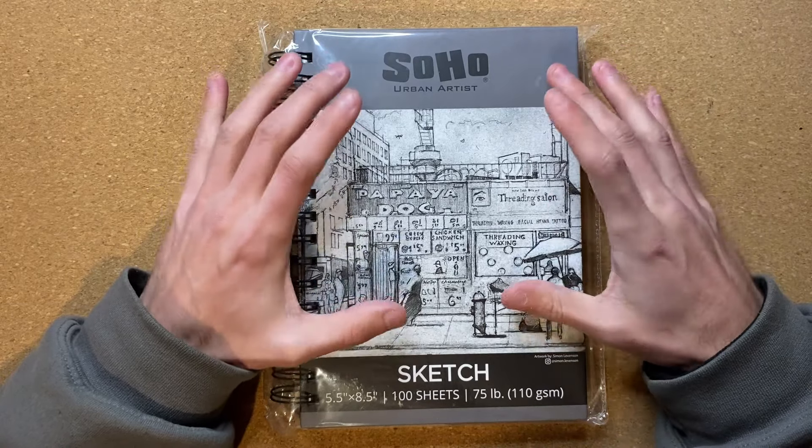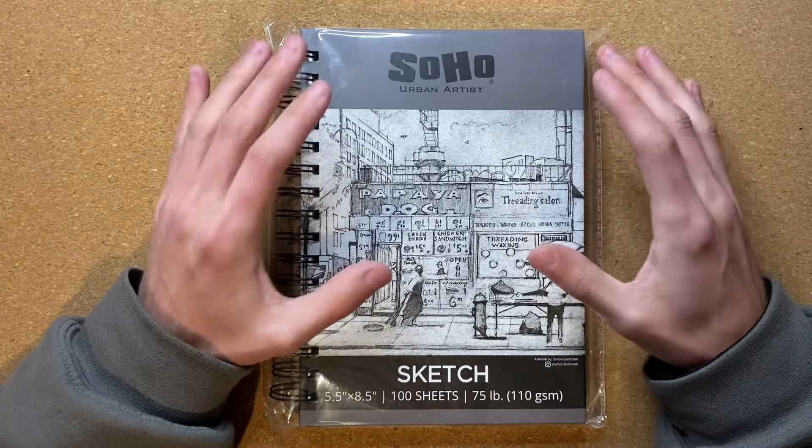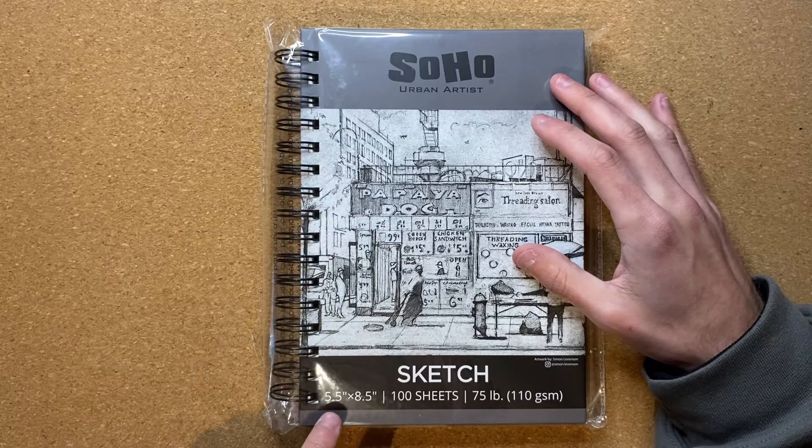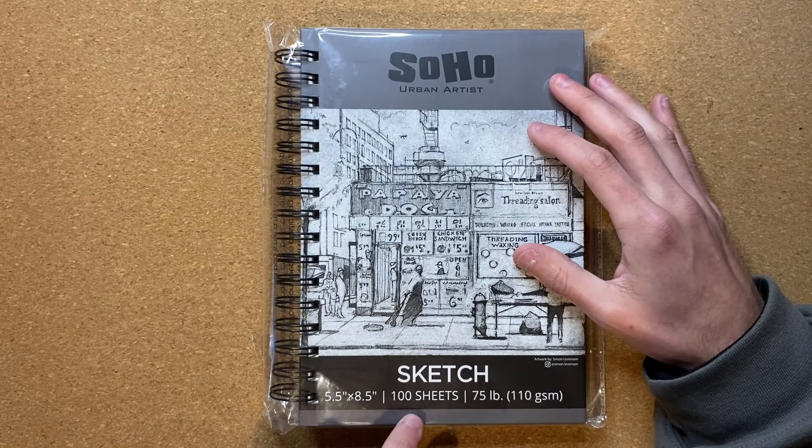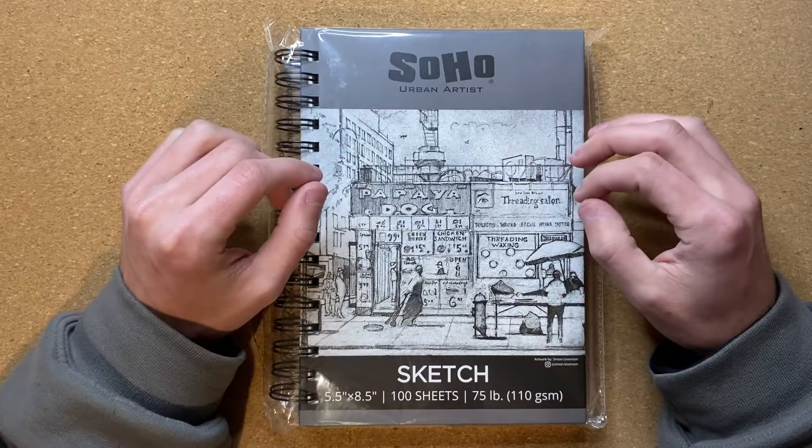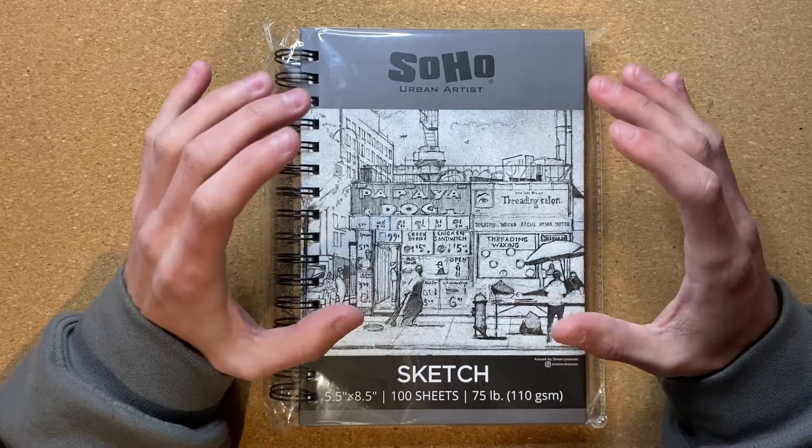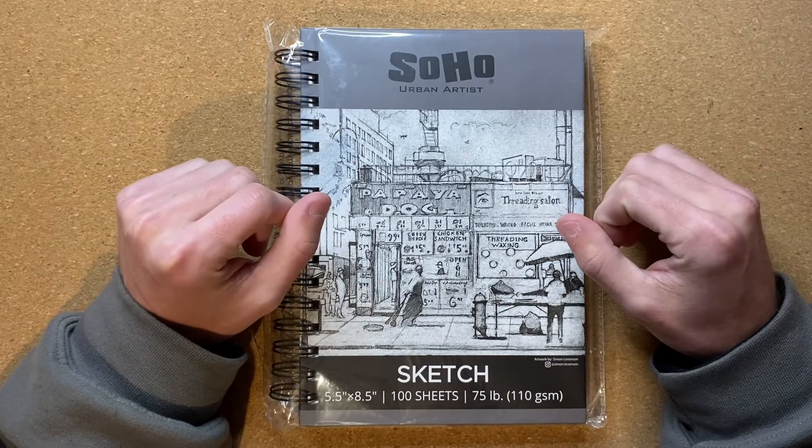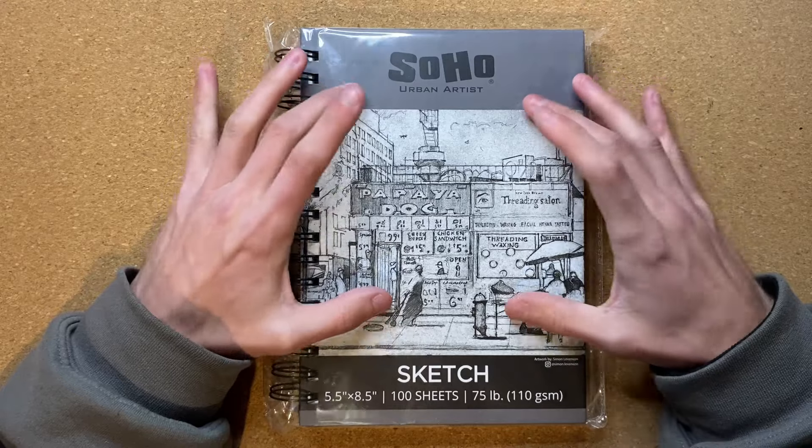But what is this sketchbook? Well, it is a Soho Urban Artist sketchbook that is 5.5 by 8.5 inches, has 100 sheets, and has 75-pound paper. This is a sketchbook that I have purchased previously, and it's a sketchbook that I like quite a bit.